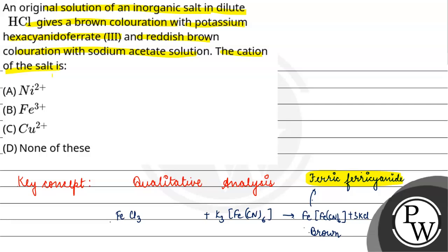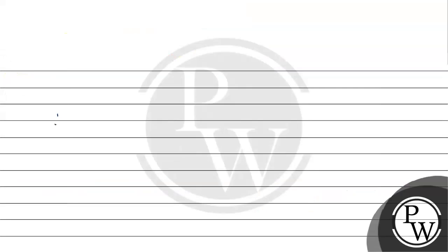And then FeCl3 reacts with sodium acetate. With sodium acetate it will basically result in the formation of Fe(CH3COO)3 and NaCl. This which we have made, ferric acetate.